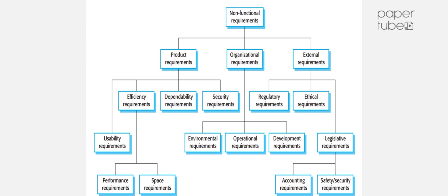External requirements arise from external agents outside the company developing the software. These include ethical requirements, law-oriented requirements, and regulations. Specifically, these are regulatory requirements, ethical requirements, legislative requirements such as accounting requirements, and safety and security requirements. These are all non-functional requirements.